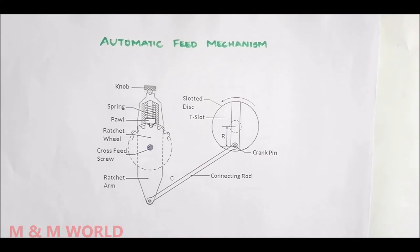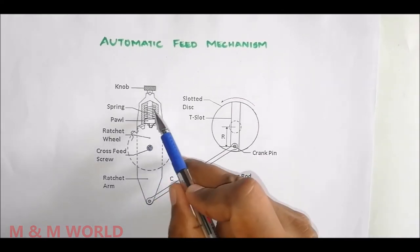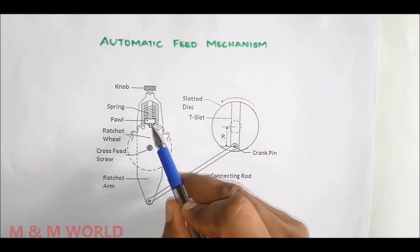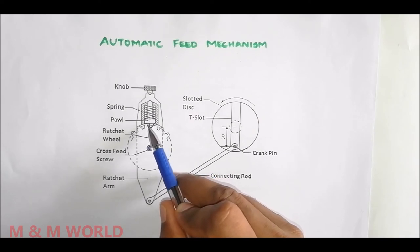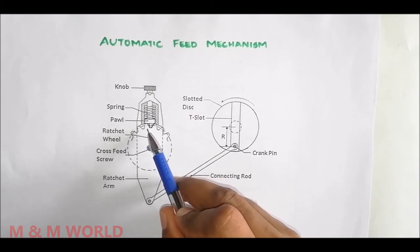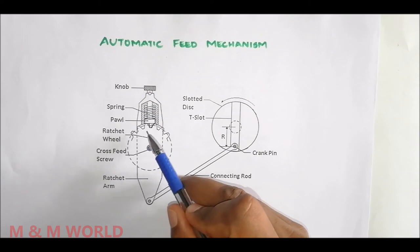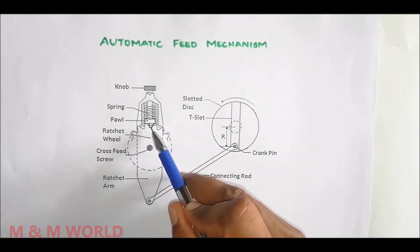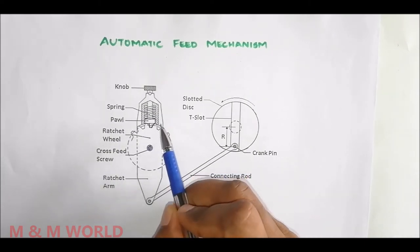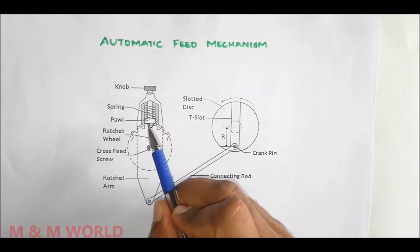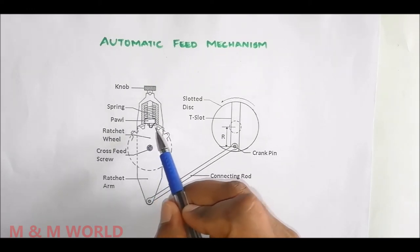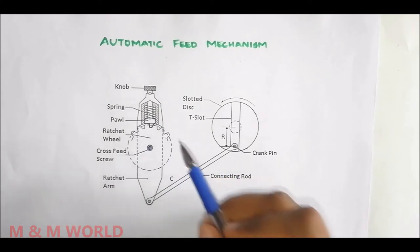The ratchet arm houses a spring-loaded pawl which is straight on one end and beveled on the other end.